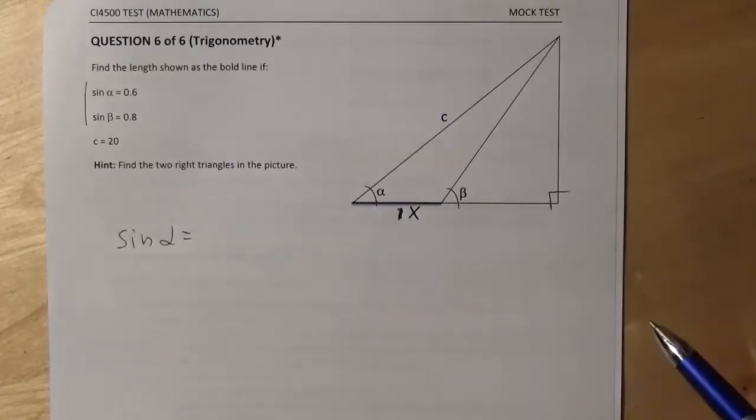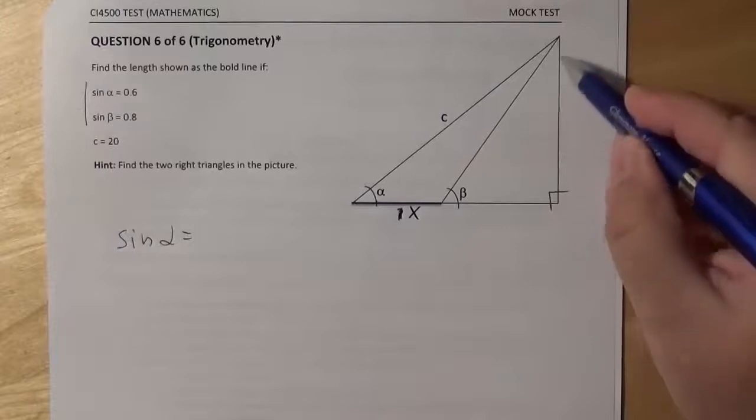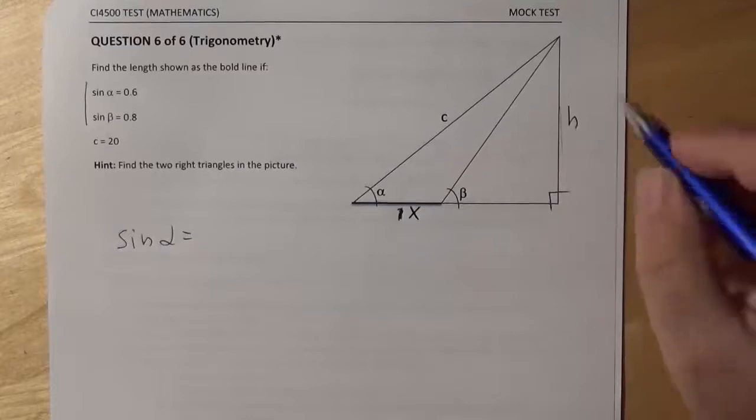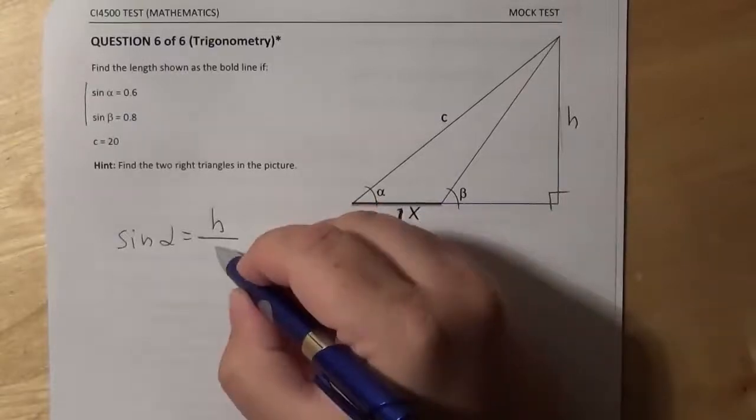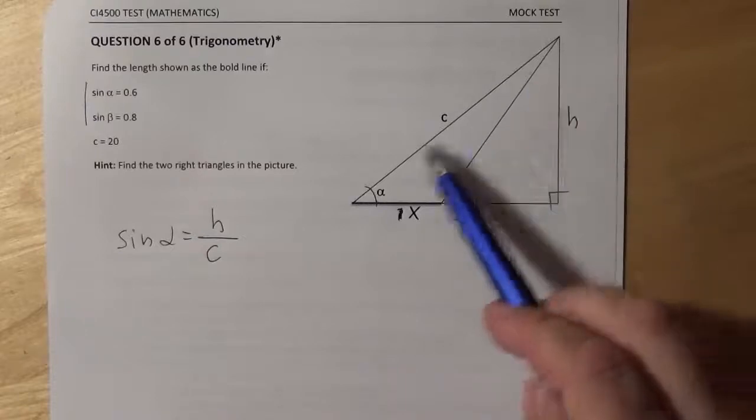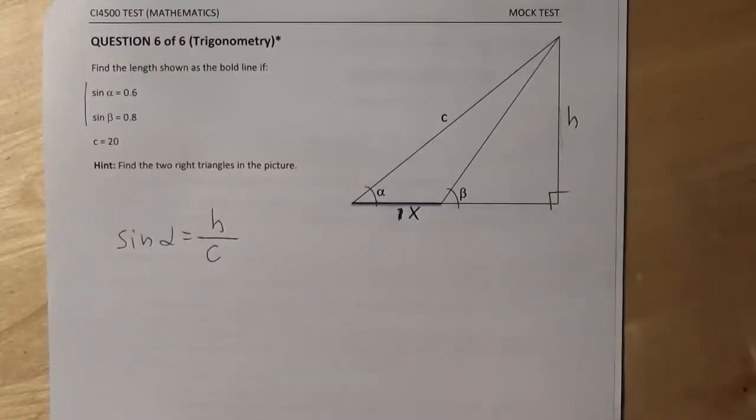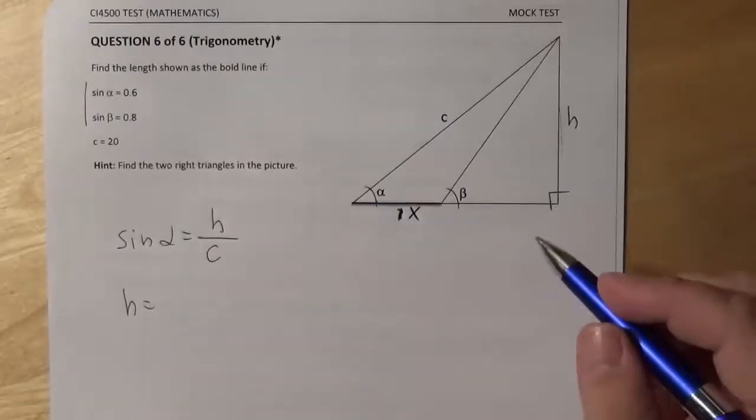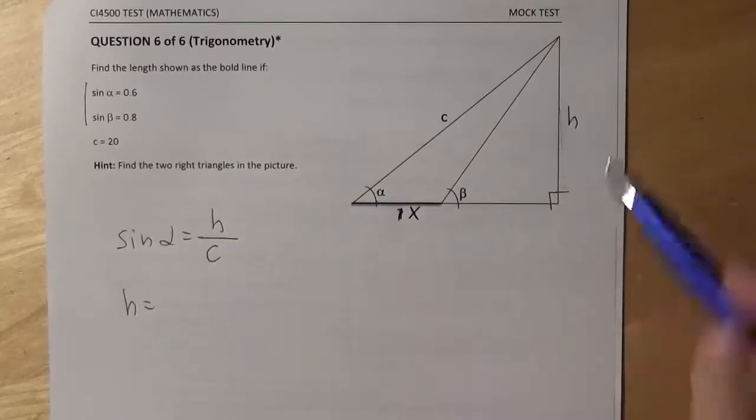But alpha is also one of the angles of this big thing here. And what we can say about sine is the opposite edge, which is here, and I need a name for it. I will call it H. So it's H over hypotenuse, C. It's a nice thing here to spot. We know sine alpha, we know C as well, it's 20. So we can very easily calculate the hypotenuse from this formula. Hypotenuse, sorry, not hypotenuse. It's H, the height of this triangle.